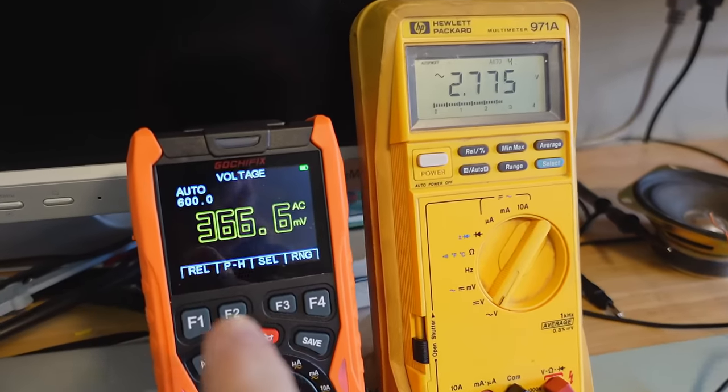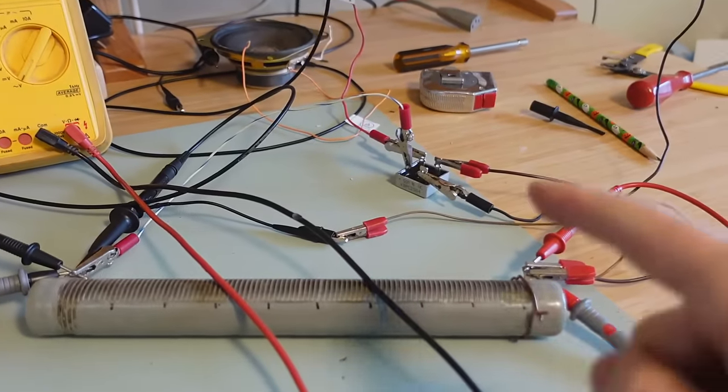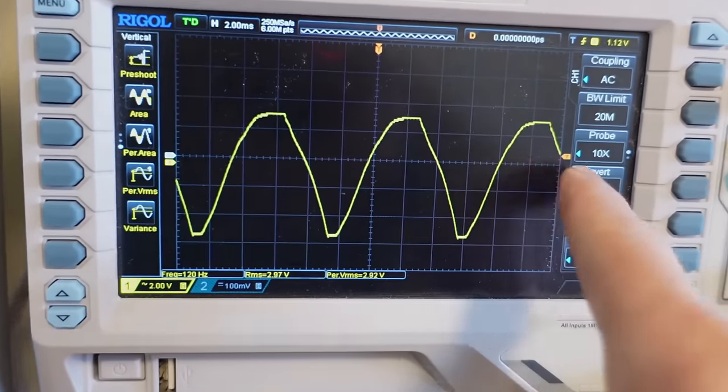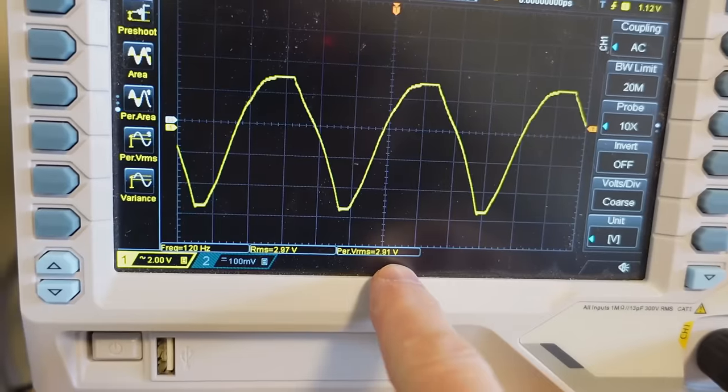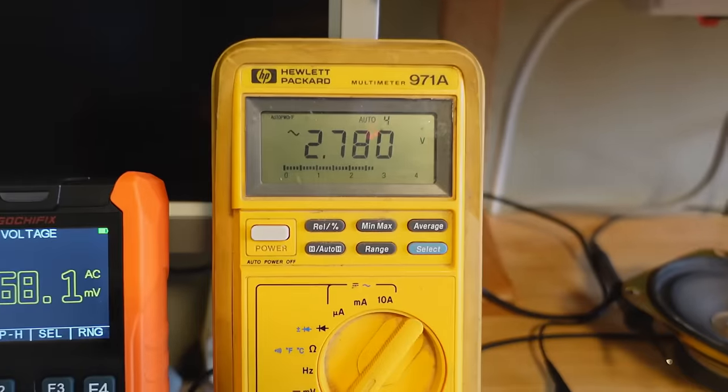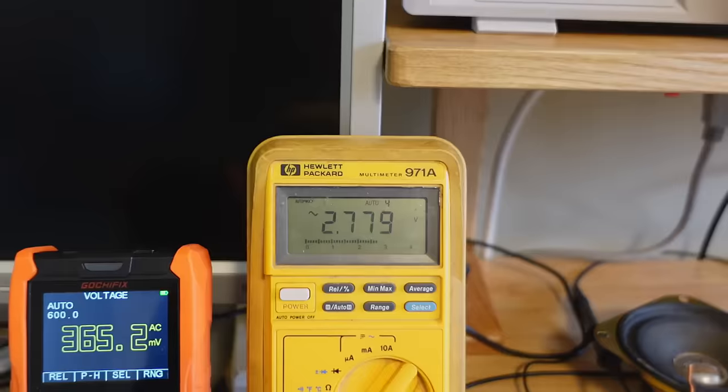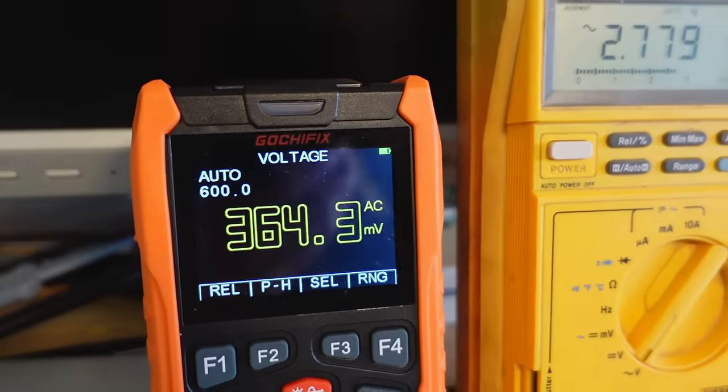I've just been measuring the funny AC measurements on this thing some more. I've got something set up - bridge rectifier with a resistor on the output, no filtering, which gives me this waveform here. The scope says the VRMS is 2.91 volts. My HP meter says 2.779, so not super close but it agrees. This one says 366 millivolts - way wrong.